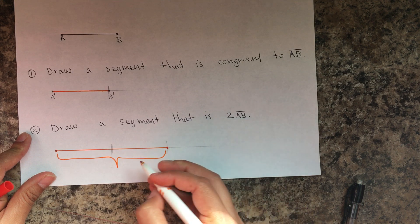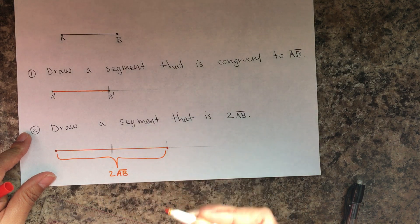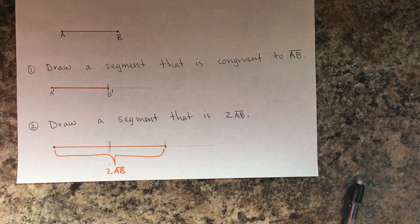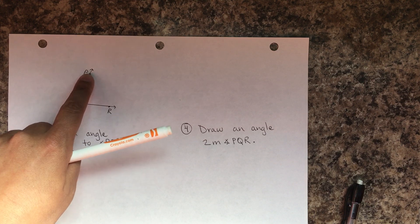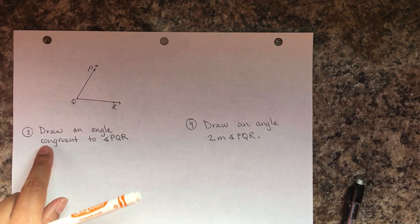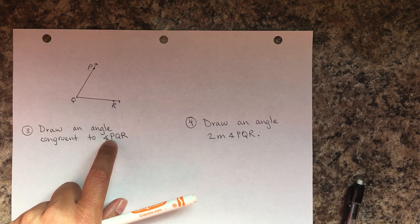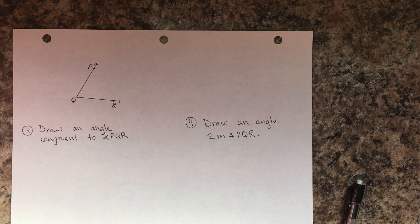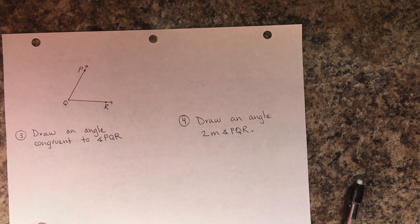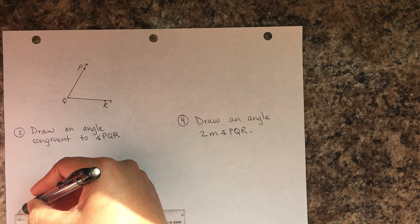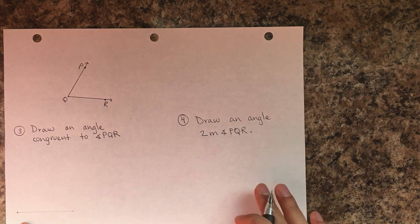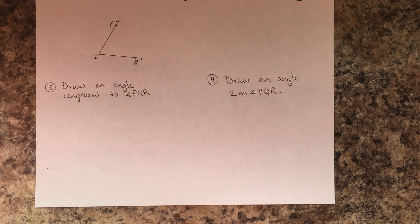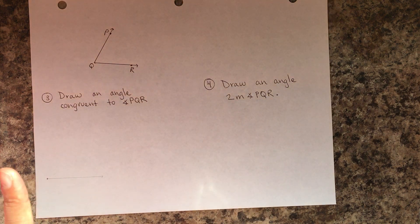Now let's do angles. We have angle PQR and it says draw an angle congruent to angle PQR. Congruent means having the same measurement. Step number one is to draw a ray — it doesn't matter how long — and this becomes the endpoint.